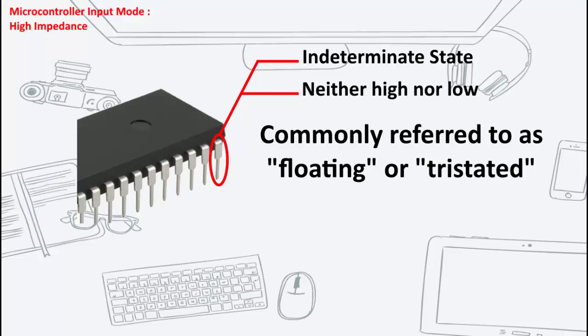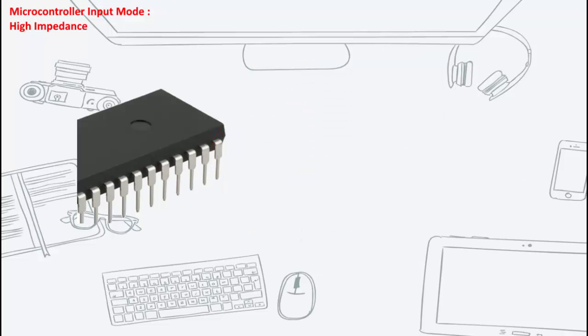To set it to high or low, it has to be driven by an external source. For example, if you want the pin to go high, you have to pull it to VDD. And if you want the pin to go low, then pull it down to VSS or ground.